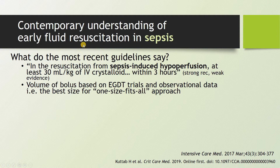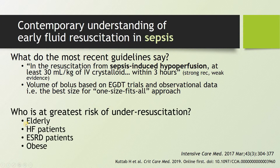The 2016–2017 Surviving Sepsis guidelines state that when patients have sepsis-induced hypoperfusion, at least 30 mL/kg of IV crystalloid should be given within three hours — a strong recommendation but on weak evidence, based on early goal-directed therapy trials and observational data. About 30 mL/kg is a good one-size-fits-all starting point. Patients at risk for under-resuscitation include the elderly, heart failure patients, end-stage renal disease patients, and obese patients — these are the patients we tend to be too conservative with, though sometimes they're already overloaded.